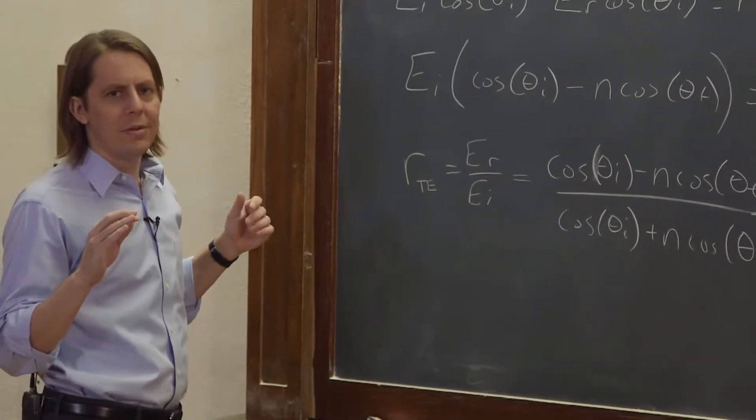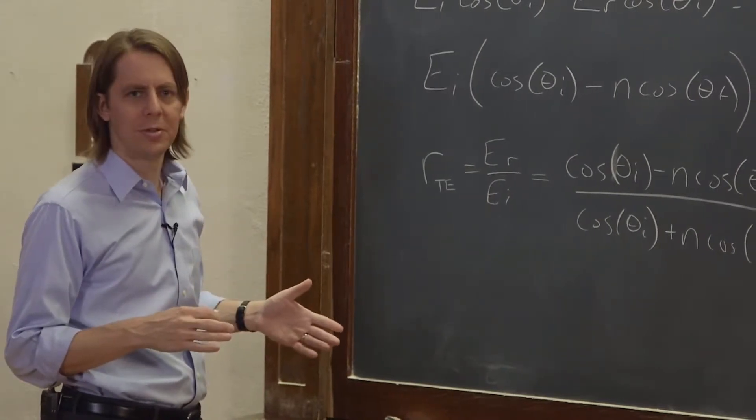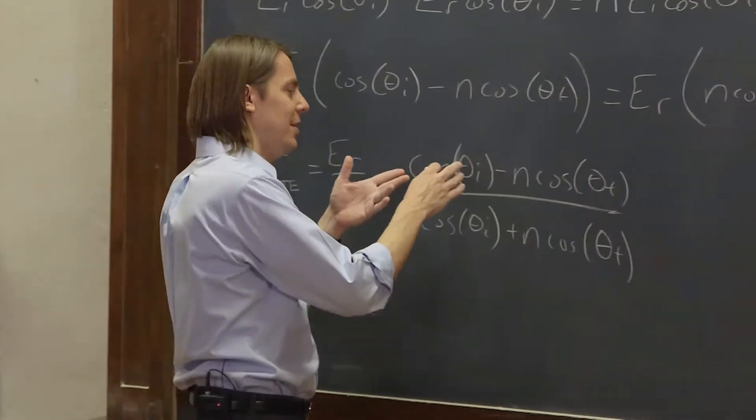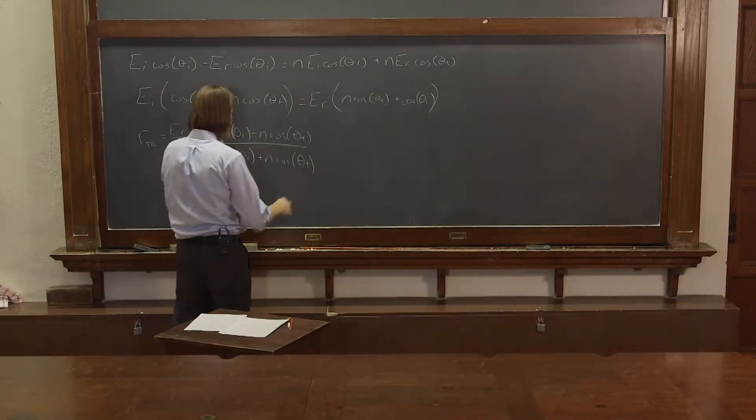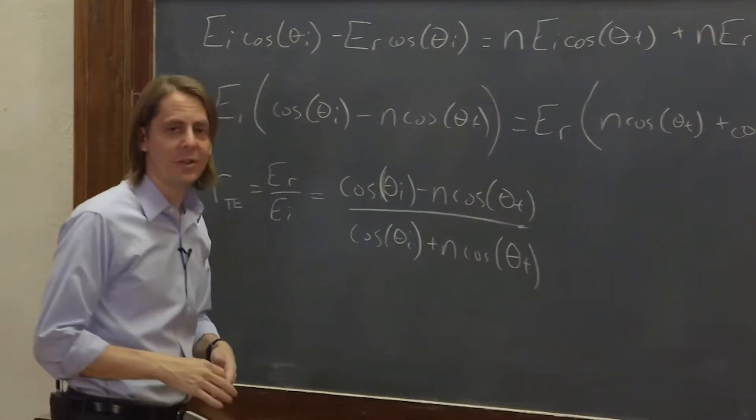And if that was the end of the story, people wouldn't hate these equations so much, okay? Because that's actually almost elegant, that's not so bad. Cosine of the incident angle minus n times the cosine of the transmitted angle over the cosine of the incident angle plus n times the cosine, that's kind of nice.